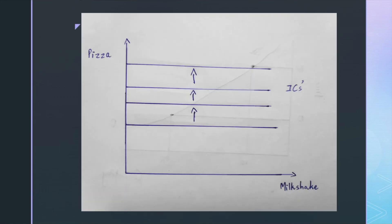If we change the axes so that milkshake is on the horizontal axis and pizza on the vertical axis, then the ICs will be horizontal, since he doesn't care about milkshakes on the x-axis. Higher amounts of pizzas consumed gives him greater satisfaction, so as the ICs move higher and higher, the amount of satisfaction obtained rises.